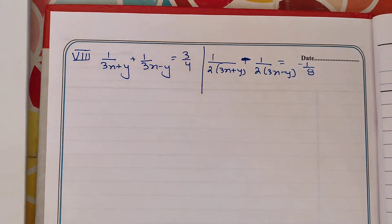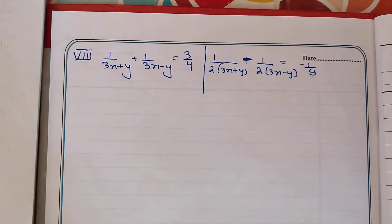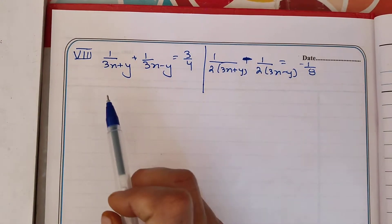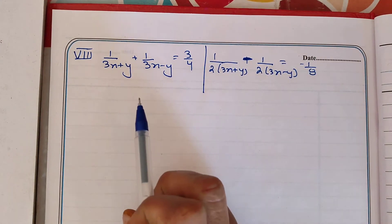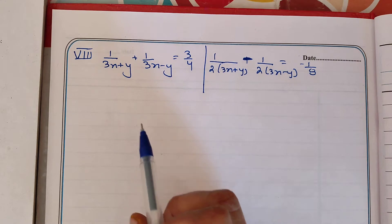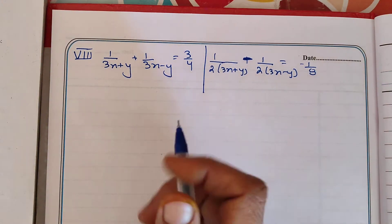If we try to solve today's question directly, this becomes a quadratic equation — it will not remain linear. Why? Because when we multiply 3x by 3x, we get 9x squared. So, first of all, we have to reduce it into the simplest form of a linear equation.